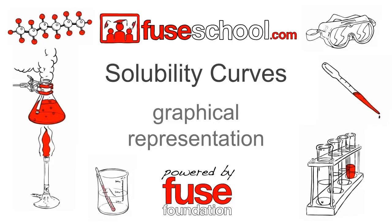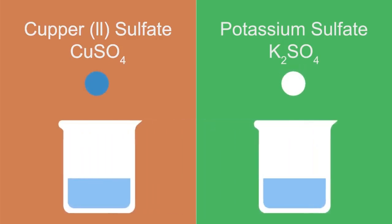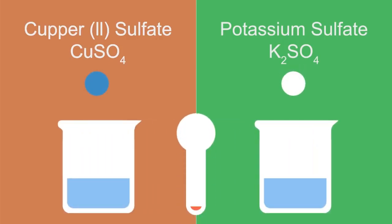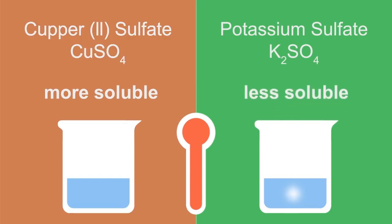If we were to compare CO2 sulfate and potassium sulfate, we will find that one is bright blue and the other is white. If we try to dissolve them in water of equal temperature, we will find that CO2 sulfate is a lot more soluble than potassium sulfate.